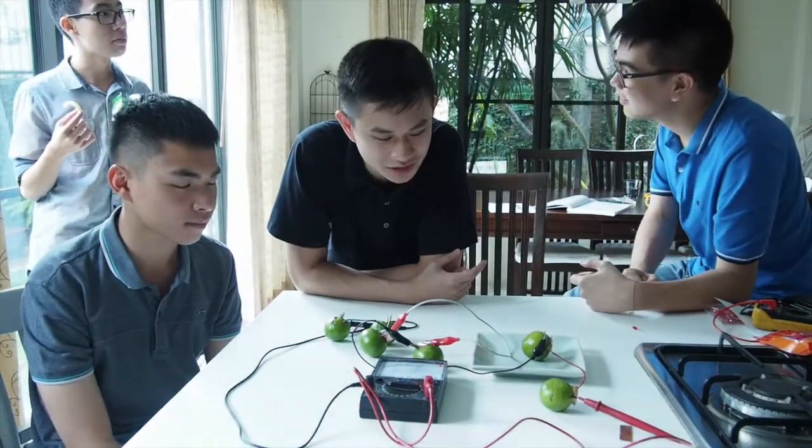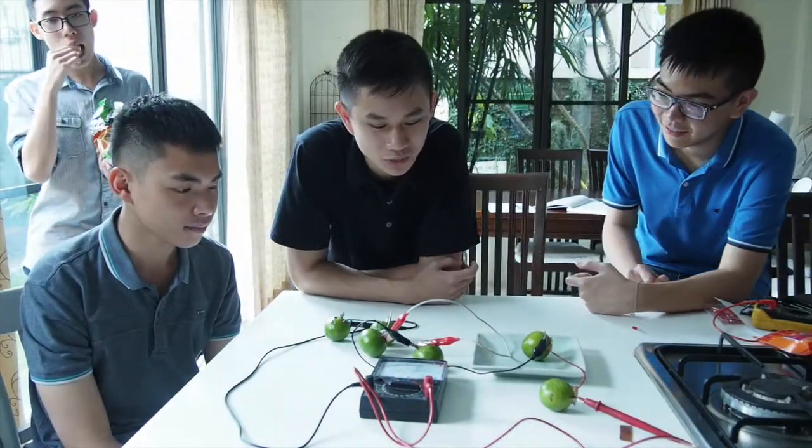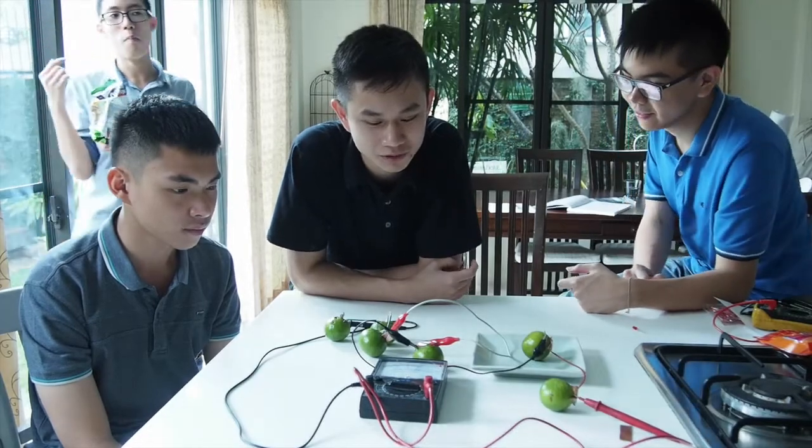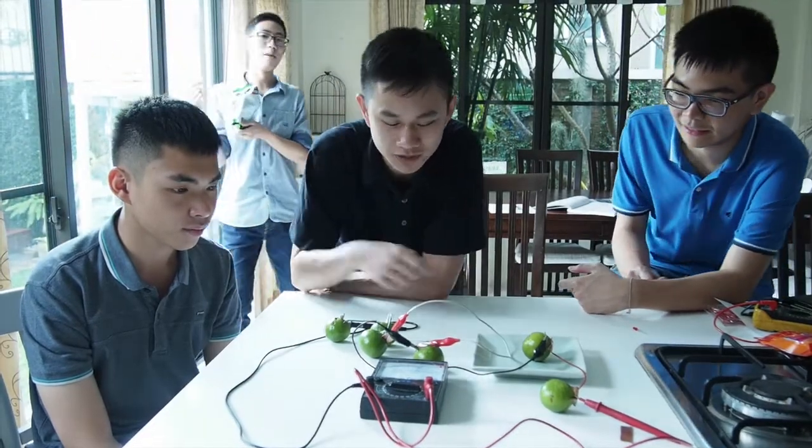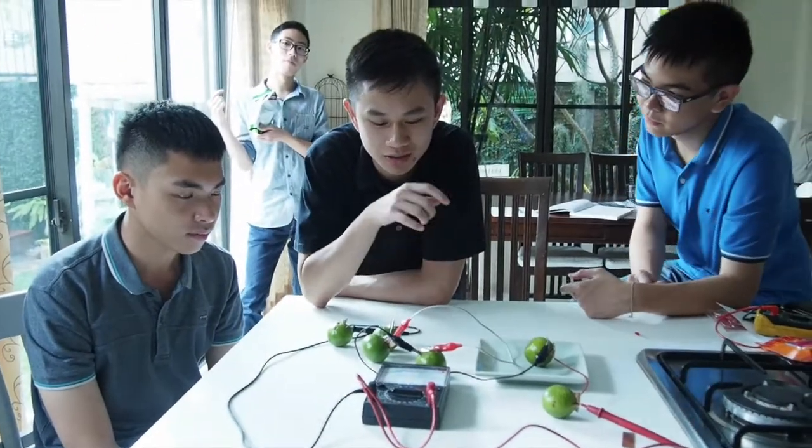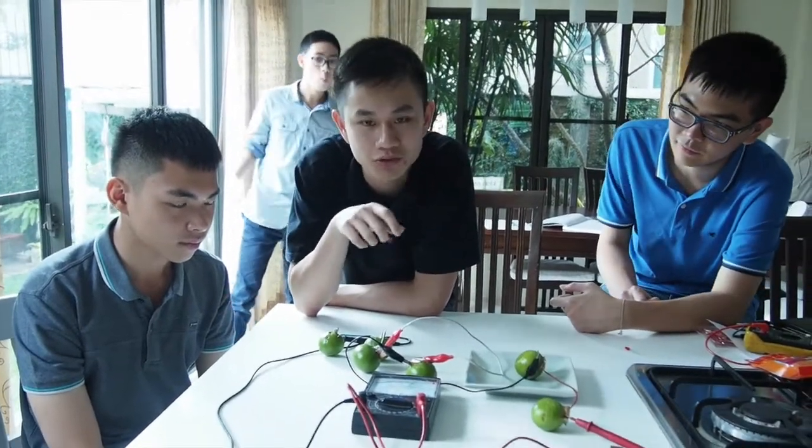Now we have 6 limes. The voltage increased to 1.5. It means that each lime can create 0.25.